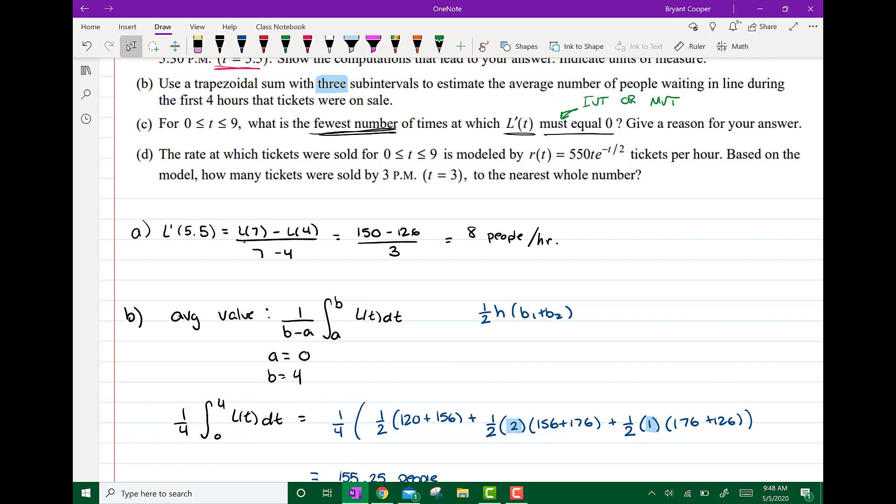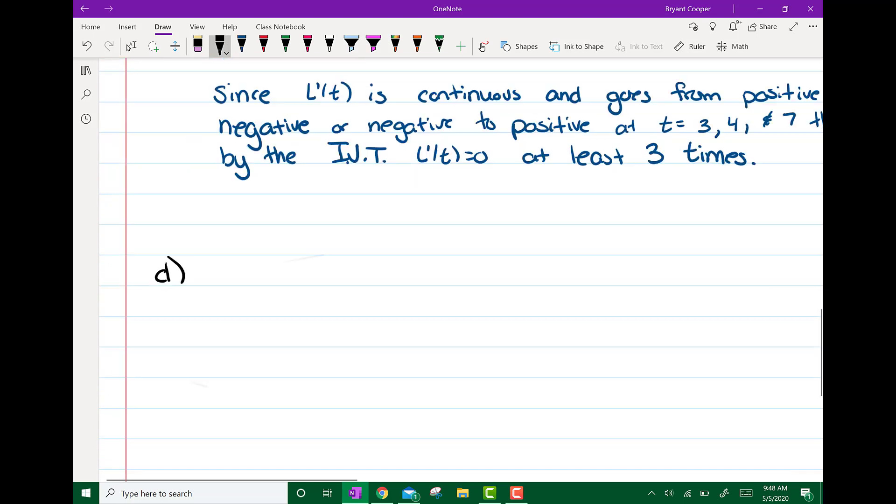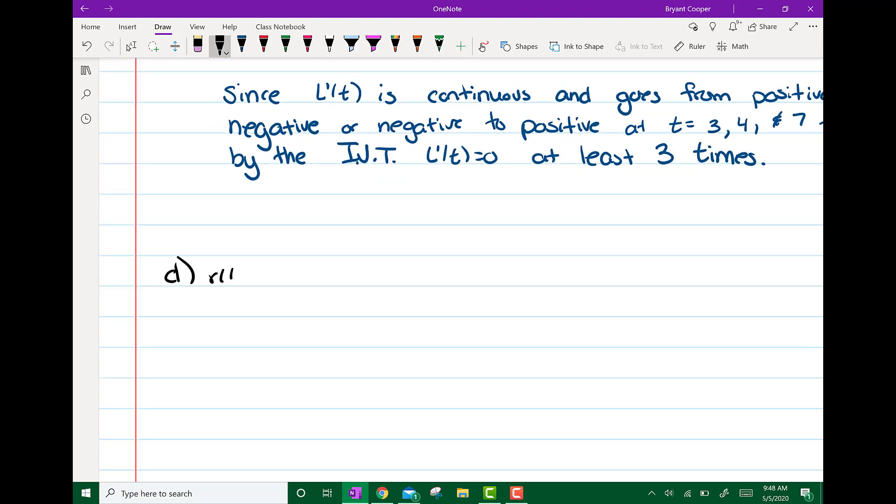The rate at which tickets were sold from 0 to 9 is modeled by this. So this is the rate at which they were sold. Based on the model, how many tickets were sold by 3 pm or t equals 3 to the nearest whole number? So again, r(t) is 550t e to the negative t over 2, and this is tickets per hour.